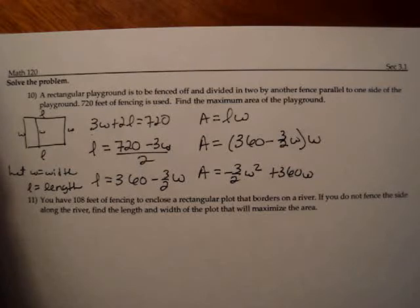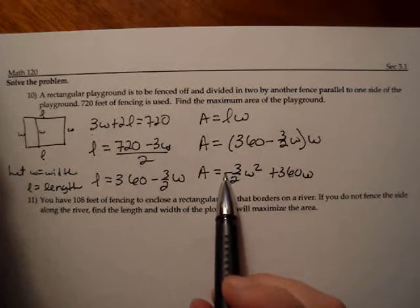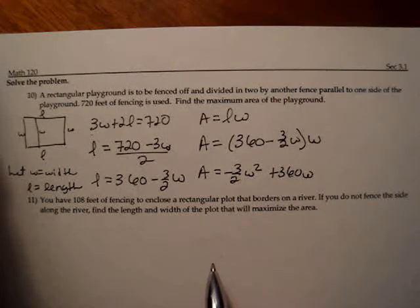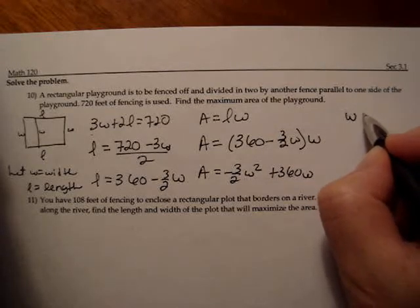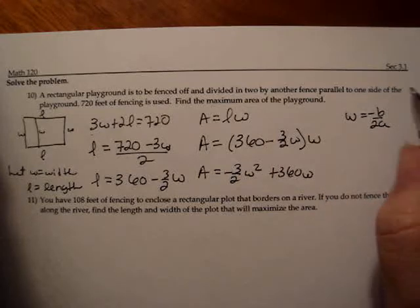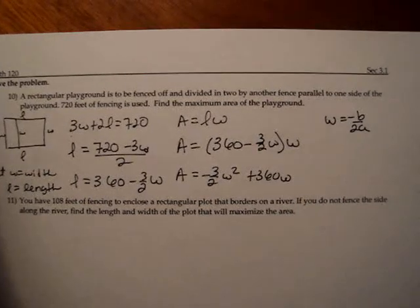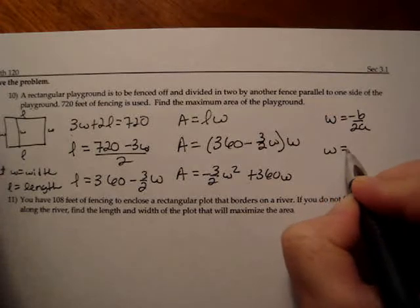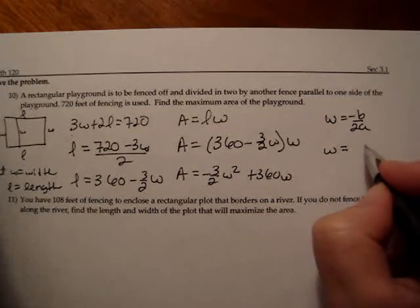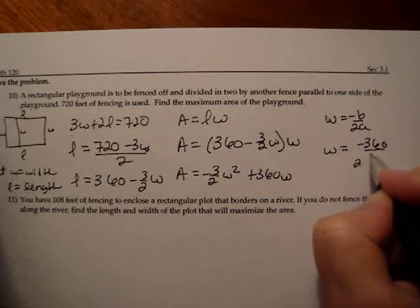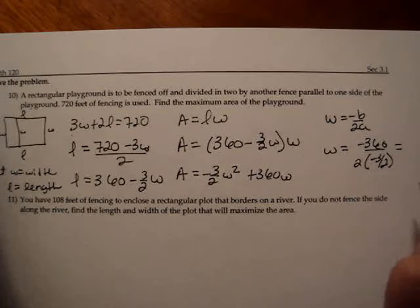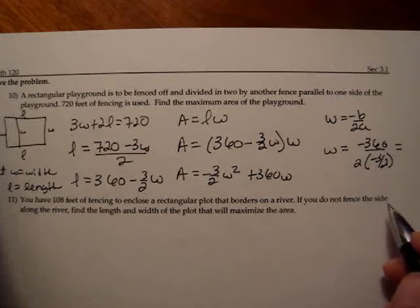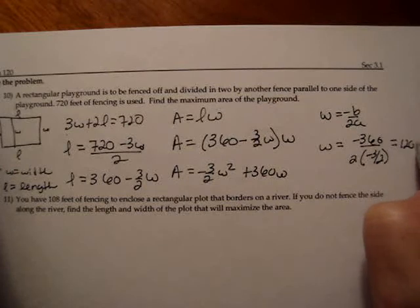Now I want to find the maximum area. This is a quadratic function. I know the graph would be a parabola that opens downward, so the maximum occurs at the vertex. So this time I know the w I'm interested in is negative b over 2a. Because this time w is the input variable. So the w that we want is negative 360 over 2 times negative 3 halves. And when you simplify that, you get 120 feet.